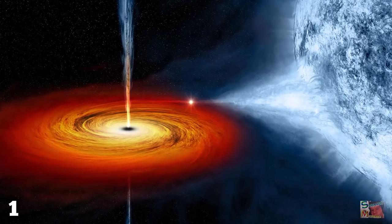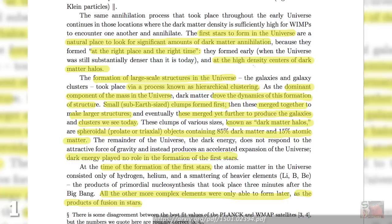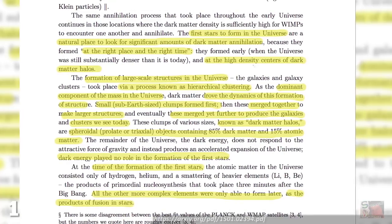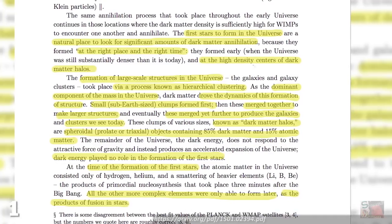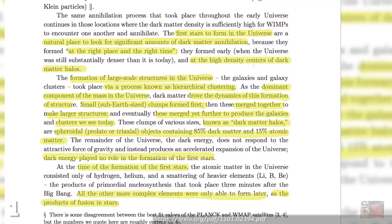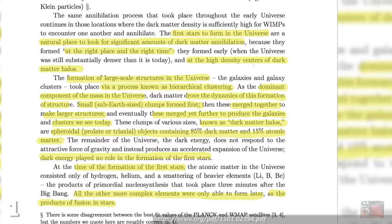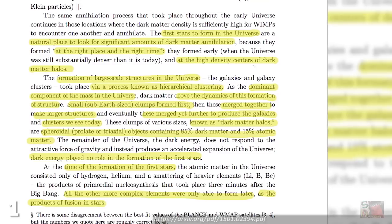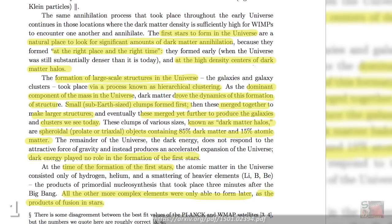In a process known as hierarchical clustering, dark matter drove the formation of structure in the universe by forming small, sub-Earth-sized clumps of atomic matter and dark matter. These clumps merged with others, and so on and so forth, until you have something called a dark matter halo, a spheroidal object made of dark matter alongside atomic matter. Within the earliest dark matter halos, the conditions were created for the first stars to be born. And within these stars, more complex elements were created, without which we'd have no complex elements today.